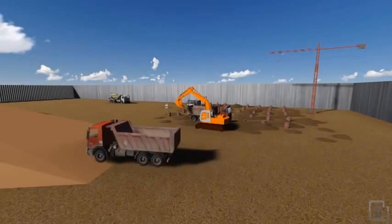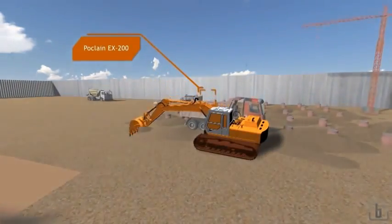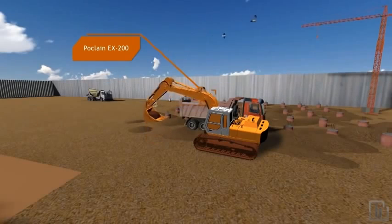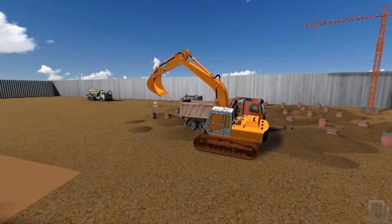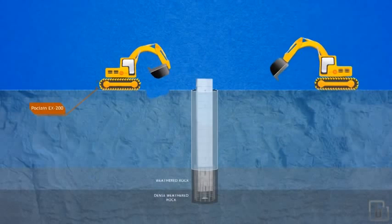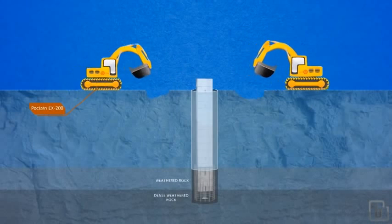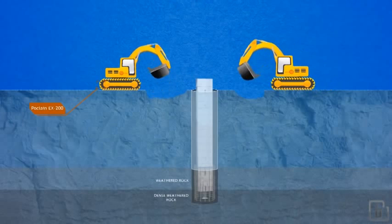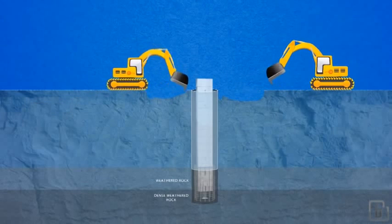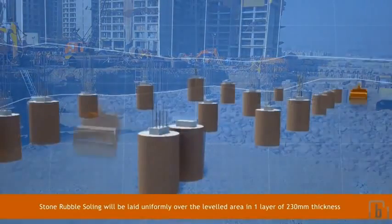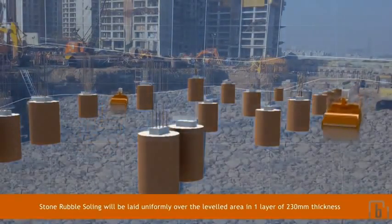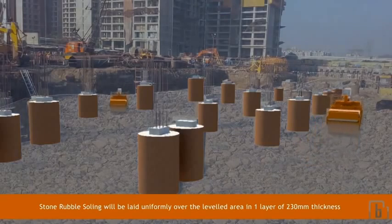Ground floor slab: after installation of column, activity for ground floor slab will be started. For ground floor slab, excavation will be carried out up to level of plus 0.4. After that, the area will be leveled for working platform for receiving rubble soling. Rubble soling stone will be laid uniformly over the leveled area in one layer of 230 millimeter thickness.